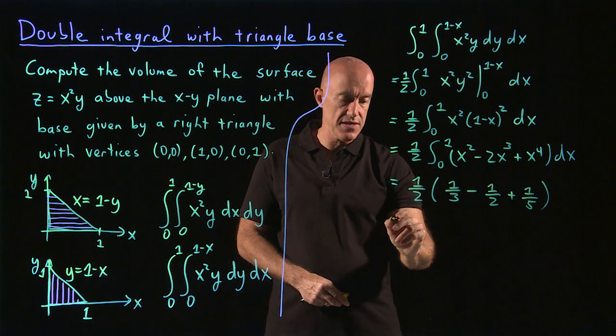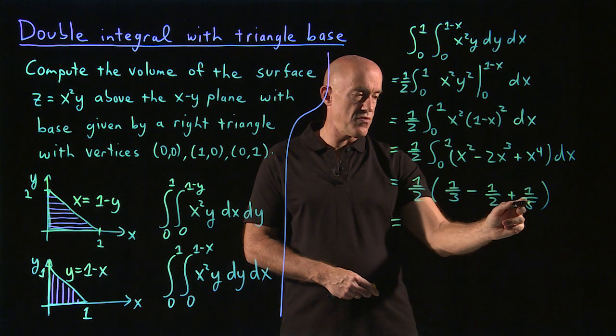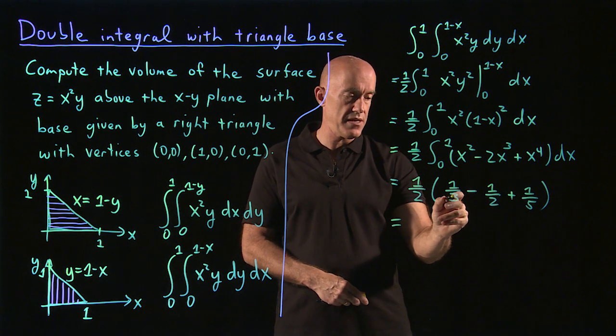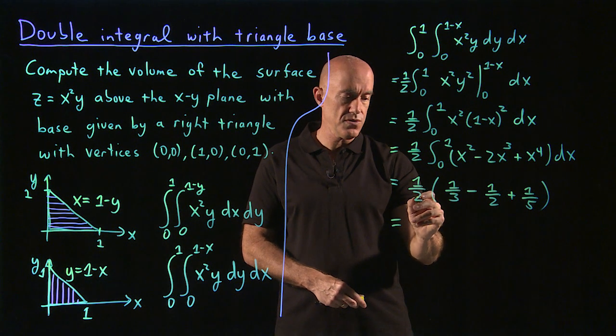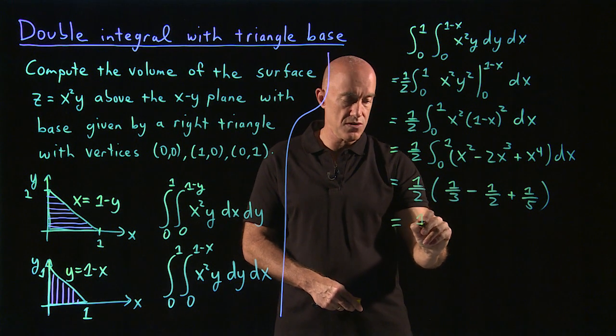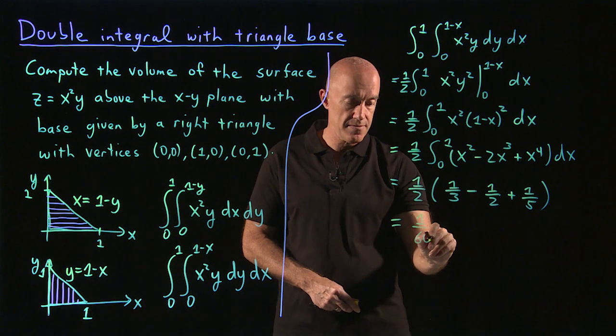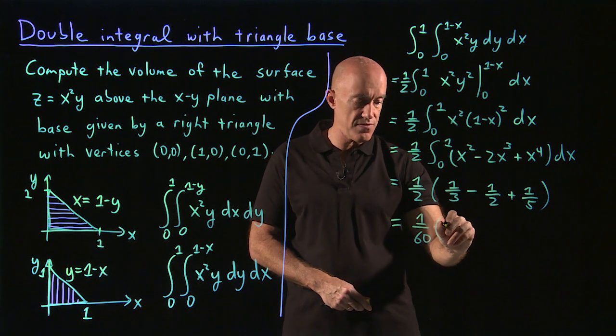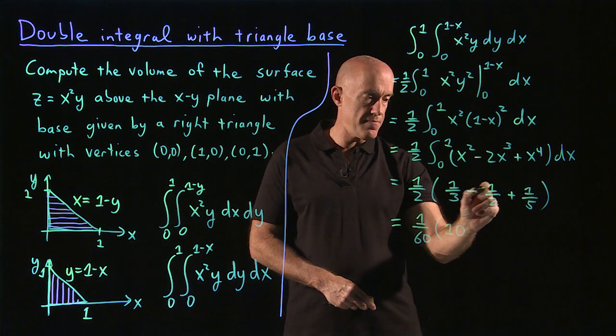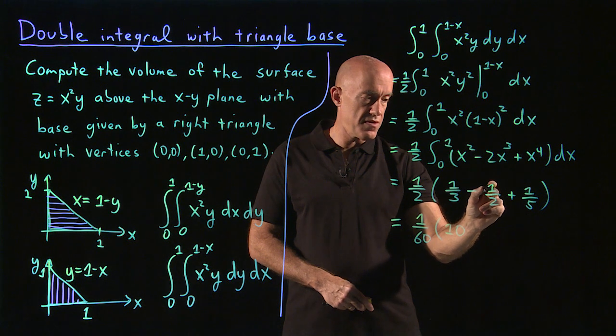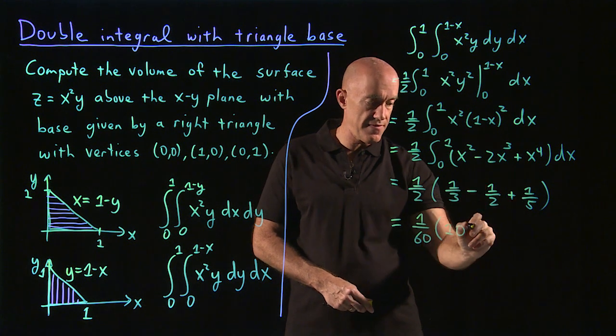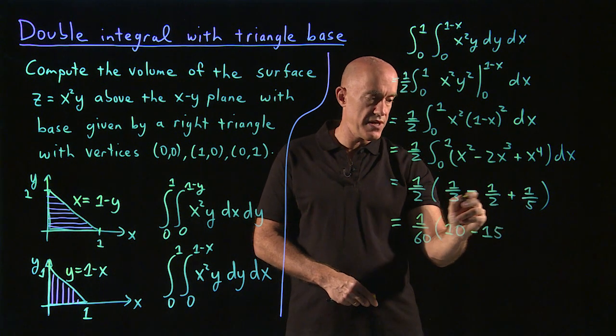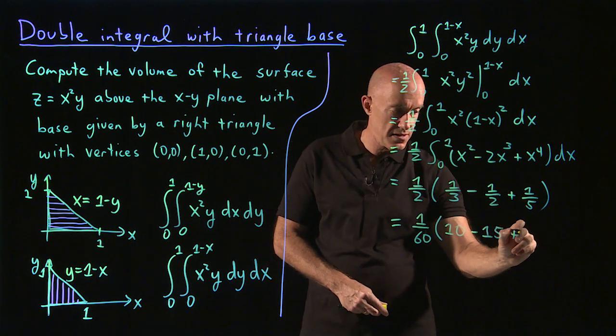We can put this under a common denominator, so that would be 5 times 2 times 3, which is 10 times 3, which is 30 times 2, would be 60, so 1 over 60. And then this 1 then would be 2 times 5, would be 10. And then minus, this 1 is 3 times 5, so minus 15. And then this 1 is 3 times 2, so plus 6.